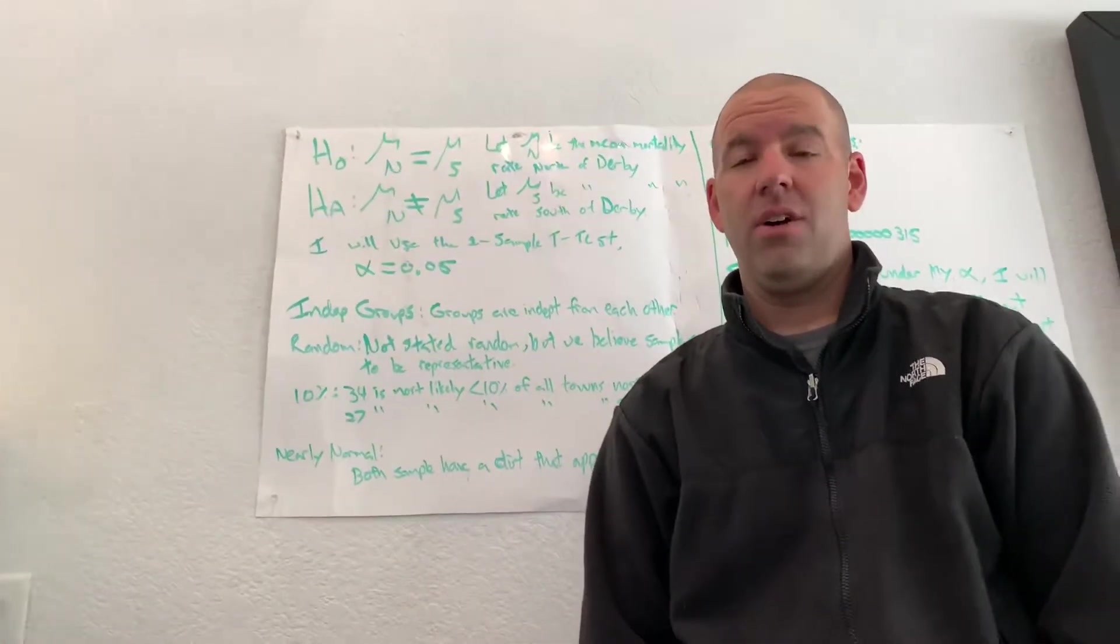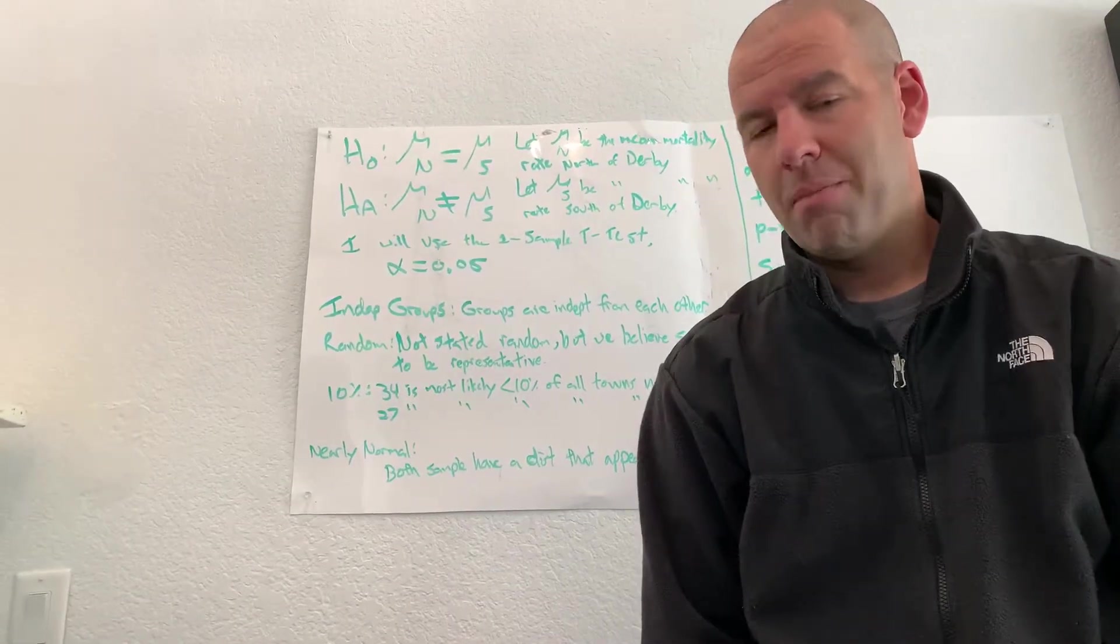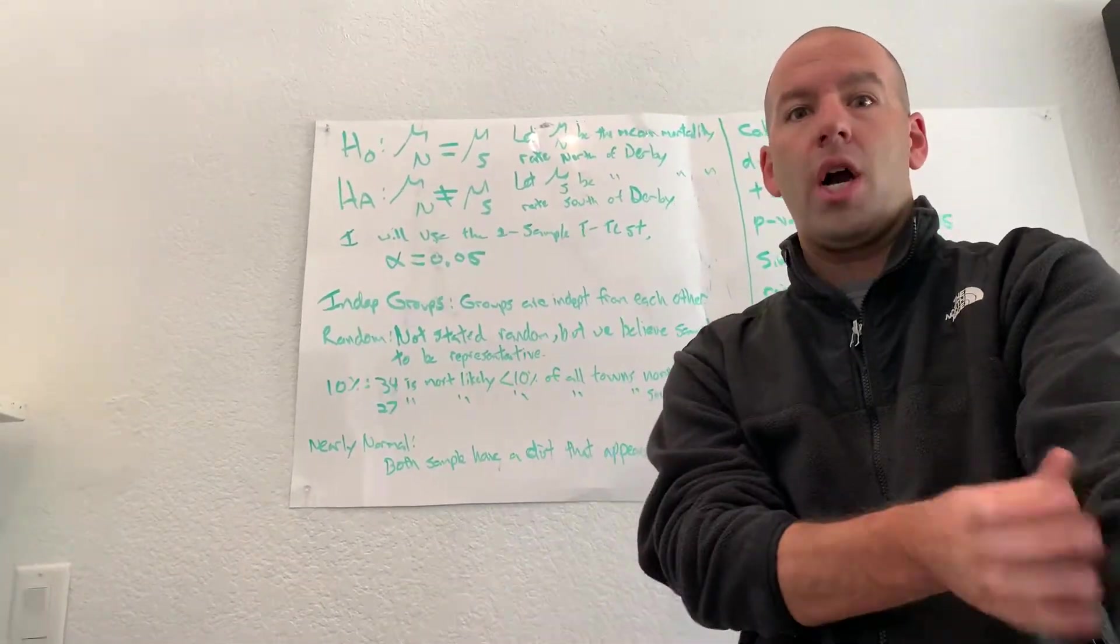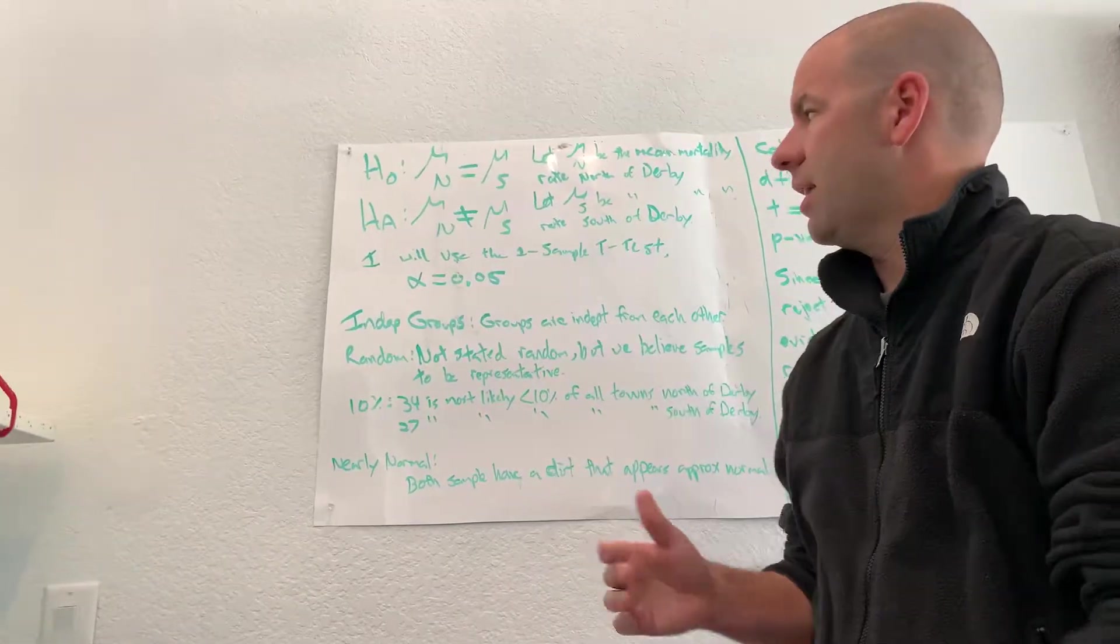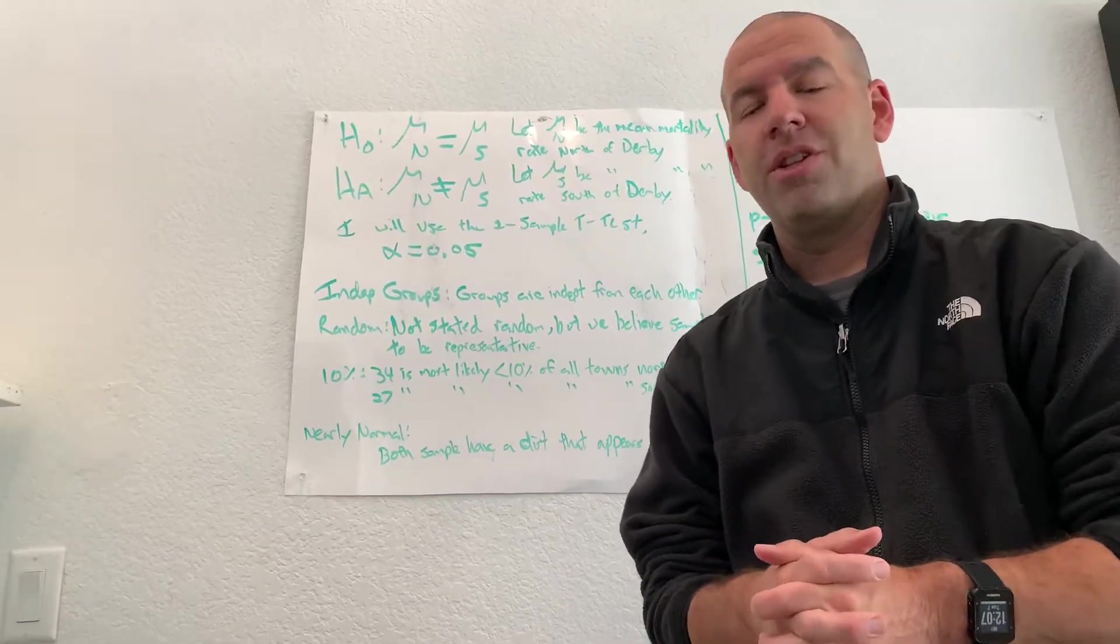Okay guys, so I have a problem here from chapter 24. It's problem number 16 from chapter 24, and I just wanted to walk through what the two-sample t-test is going to look like once again.